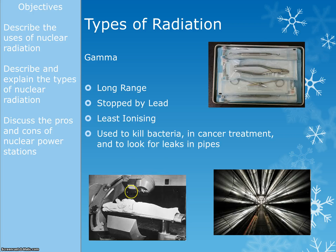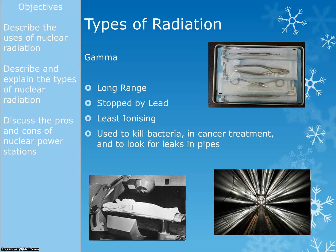Another use of gamma is cancer treatment. A machine emits gamma radiation and is rotated around the patient so it passes through lots of different bits of healthy tissue but always goes through the cancer cells, causing them to die. Gamma can also be used to detect leaks in underground pipes — put the gamma emitter in, detect it from above ground, and if you get a concentration in one place, there's probably a leak there.